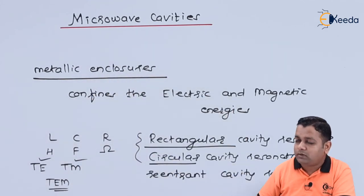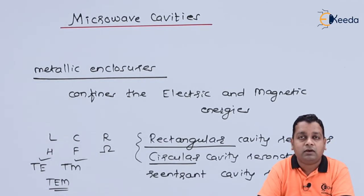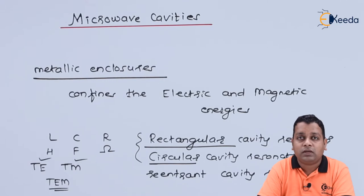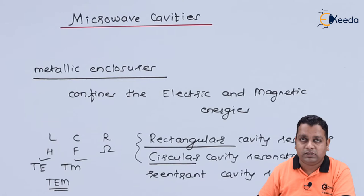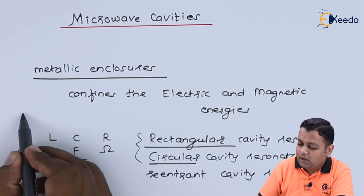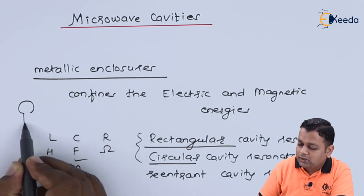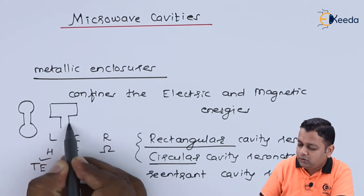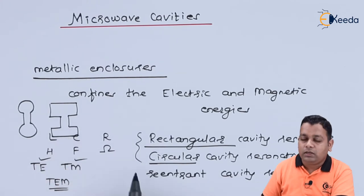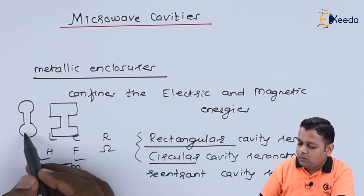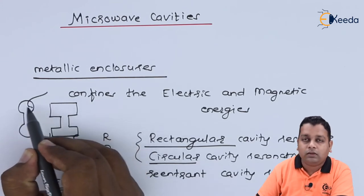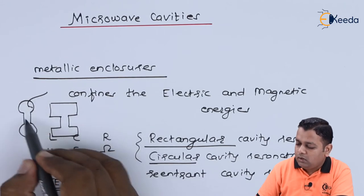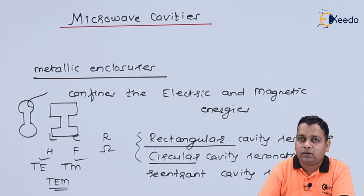The third type, the Re-entrant Cavity Resonator, we have already encountered while learning the second chapter on linear microwave beam tubes. The two-cavity klystron and multi-cavity klystron actually use re-entrant cavities. Re-entrant cavities are used in either the coaxial type or the toroidal type. From one or two of the grids, we can take the output or excite the mode into the hollow cavity of the re-entrant cavity.